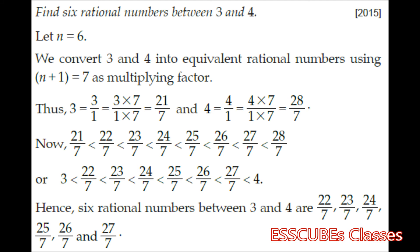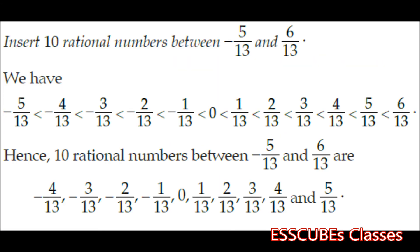Now suppose we are asked to insert 10 rational numbers between minus 5 by 13 and 6 by 13. This is one of the simplest questions. Since one is minus and the other is plus with the same denominator, we simply list the rational numbers in between: minus 4 by 13, minus 3 by 13, minus 2 by 13, minus 1 by 13, 0, 1 by 13, 2 by 13, 3 by 13, 4 by 13, and 5 by 13. This was pretty easy.